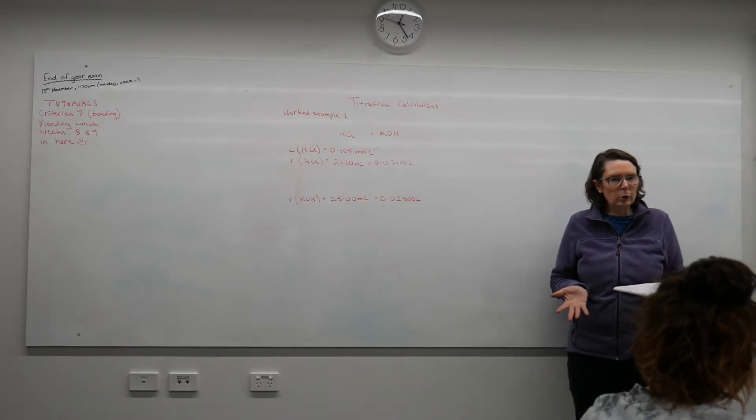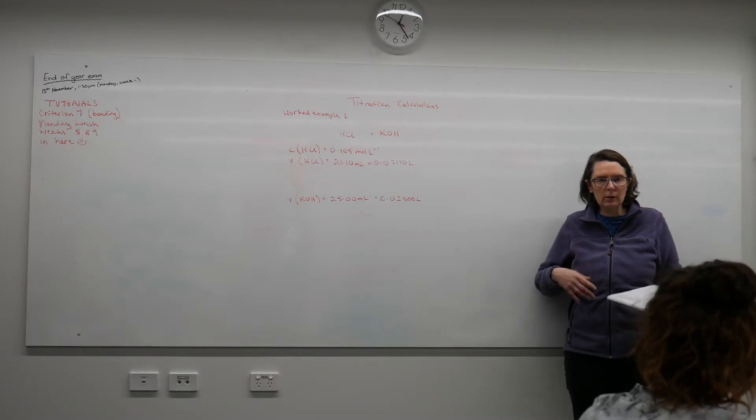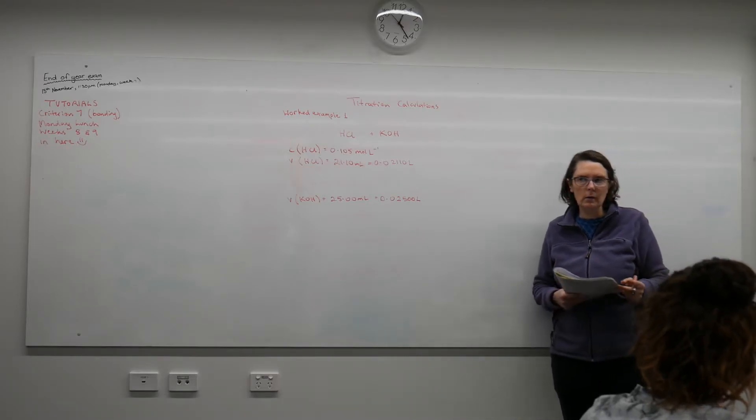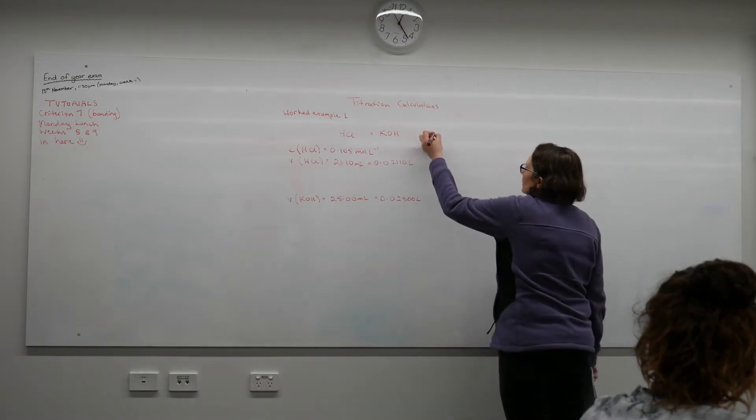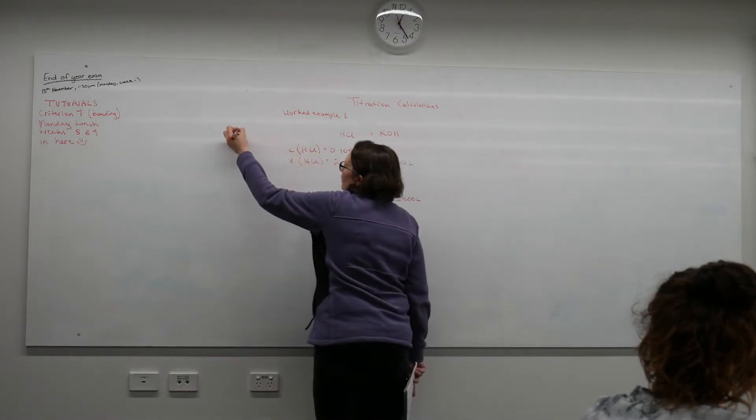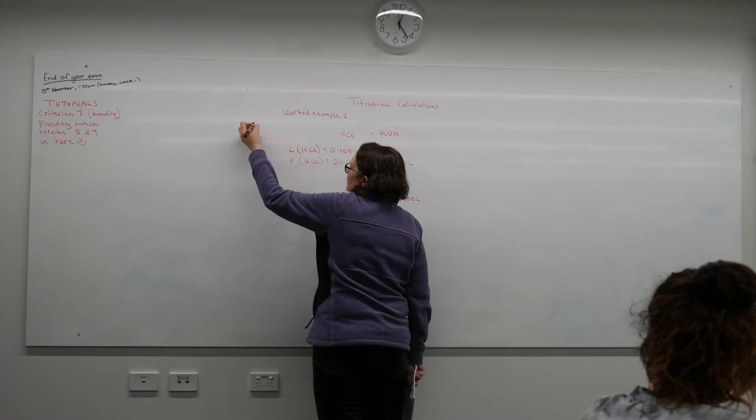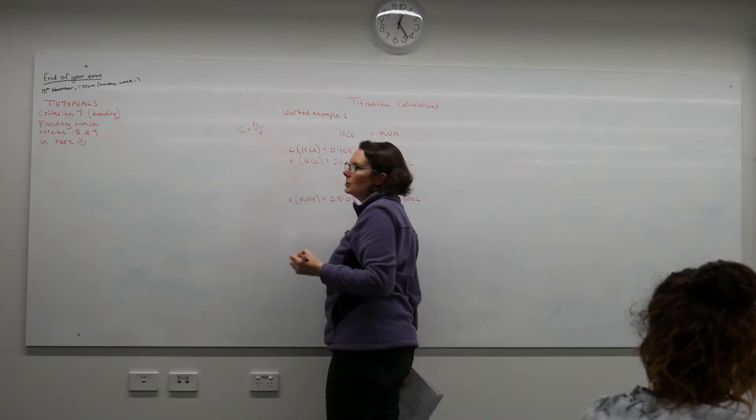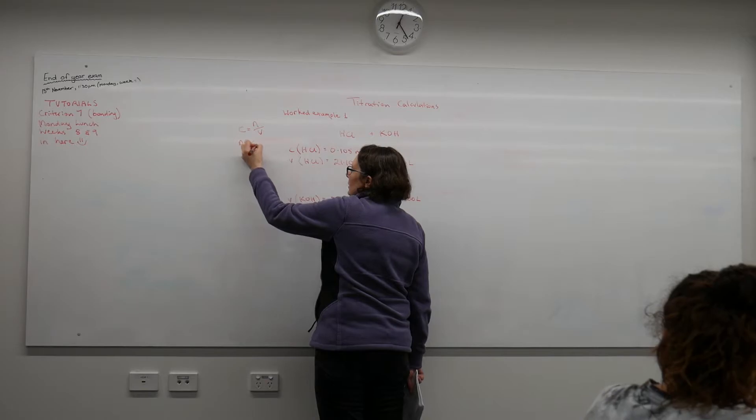The one that we have the two pieces of information with is the one that we can get our calculation going with. We know that our formula when we're talking about volumes is C equals N over V, or N equals CV.